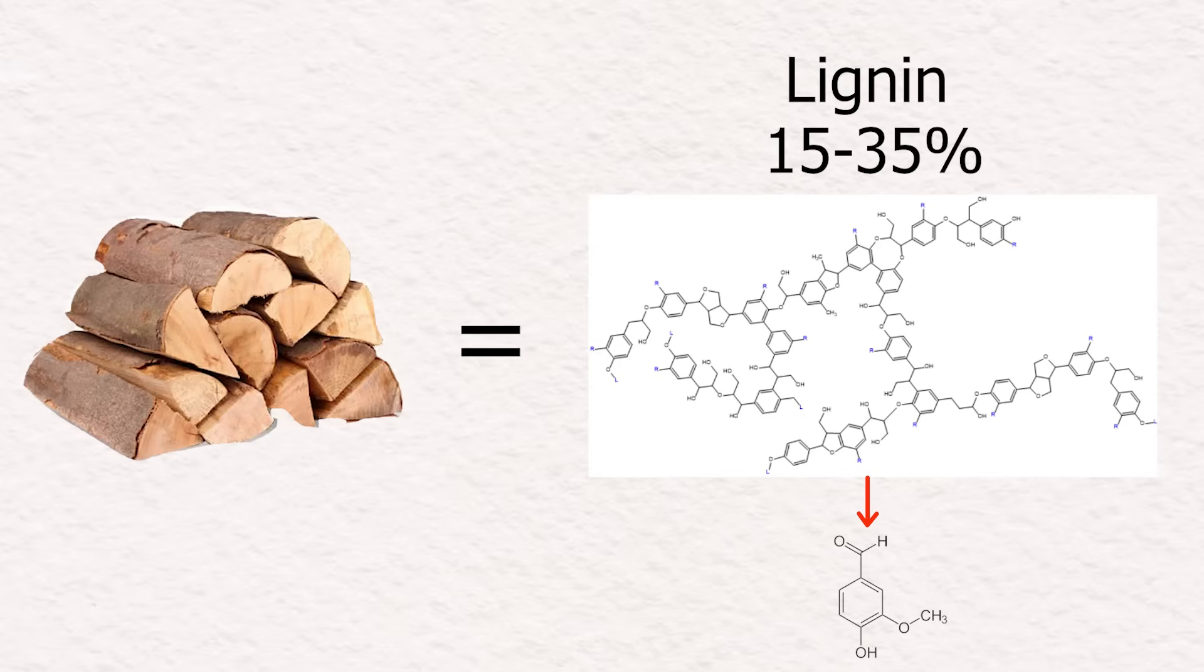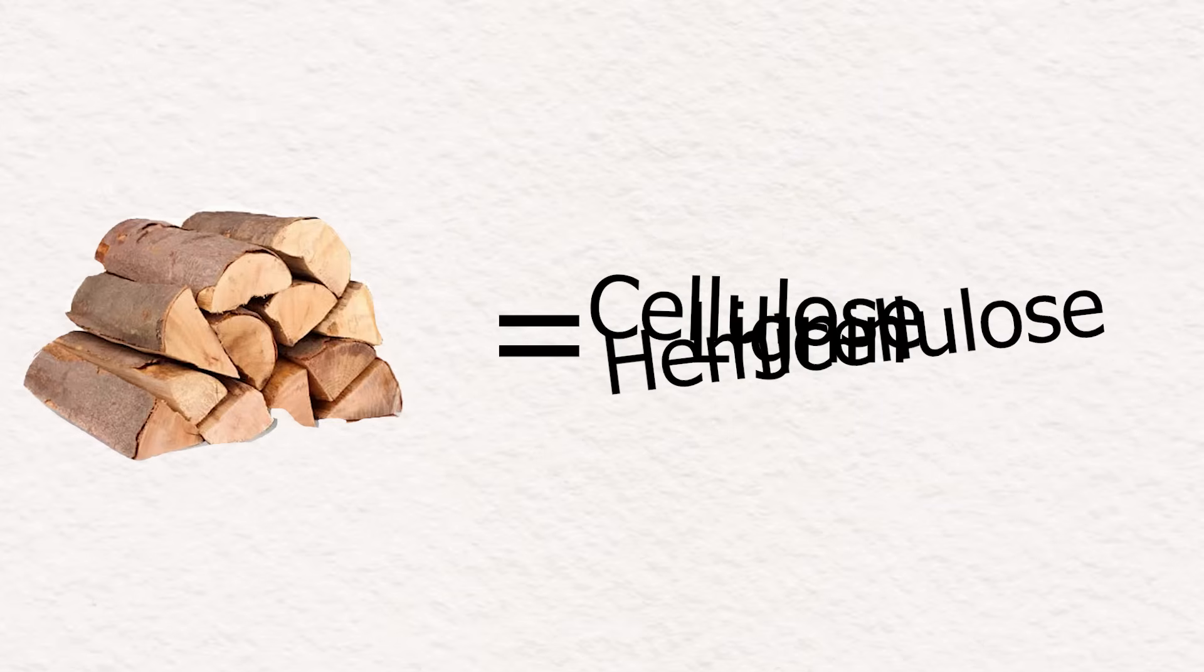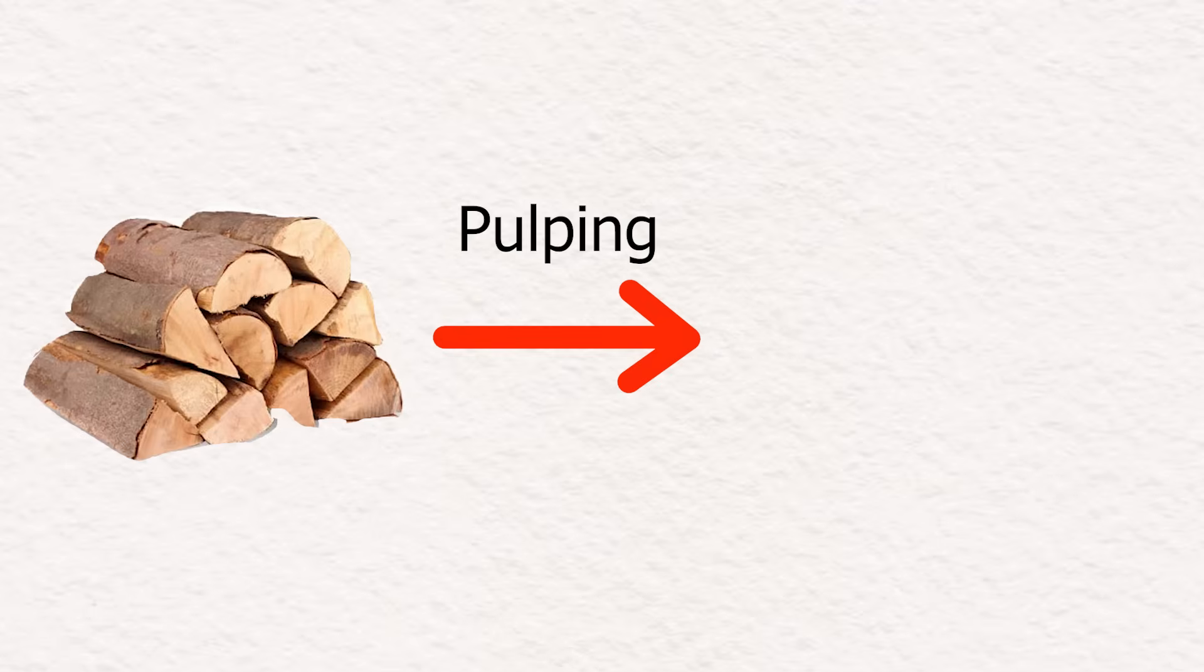But to get lignin from wood, it has to be separated from the cellulose and hemicellulose, which the remainder of the wood consists of. These three components are all stuck together and they are separated through a process called pulping.